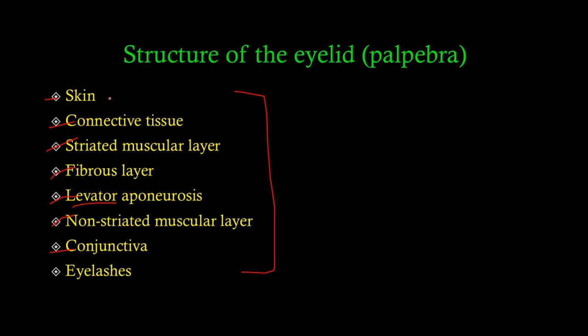Starting with the skin: the skin of the eyelid is actually the thinnest skin in the whole body — it's almost transparent. Just like skin everywhere in the body, it contains sweat glands, sebaceous glands, and hair in the form of eyelashes. After that there is connective tissue, which supports the skin.